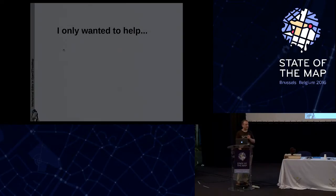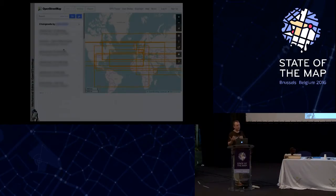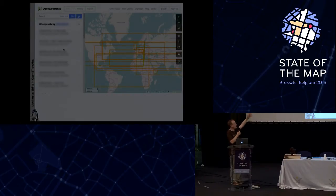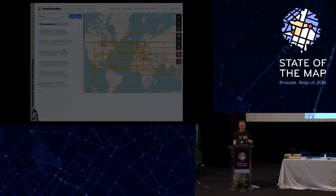If you do these kinds of worldwide mechanical edits — like changing all the capital B buildings — then among other things, the list of your changesets viewed in the API will look like tons of really large bounding boxes. No one will be able to easily see what you've been doing and where.